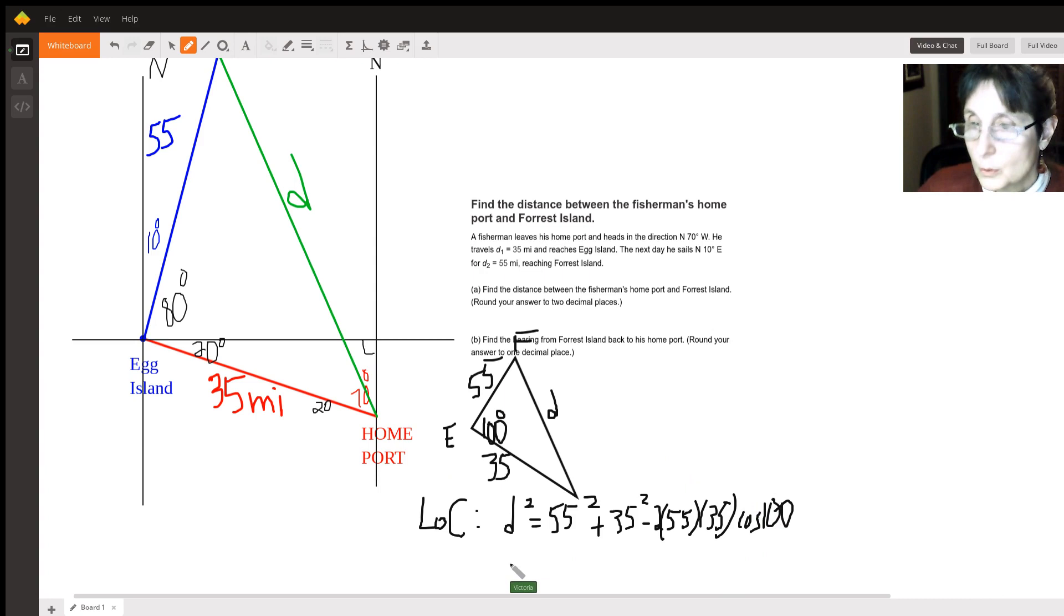times the cosine of the angle that's sandwiched between them which is 100. Now when you plug all those numbers in and take the square root, you get that the distance is 70.13 miles.